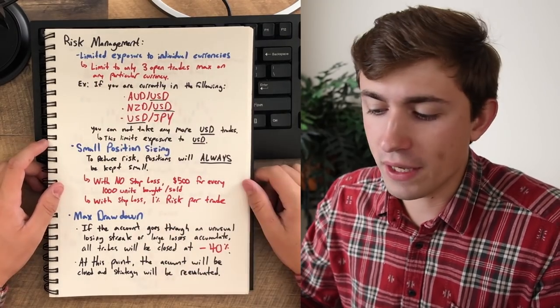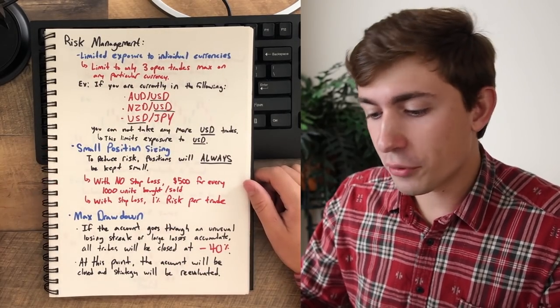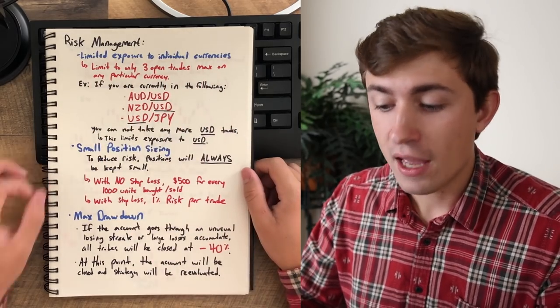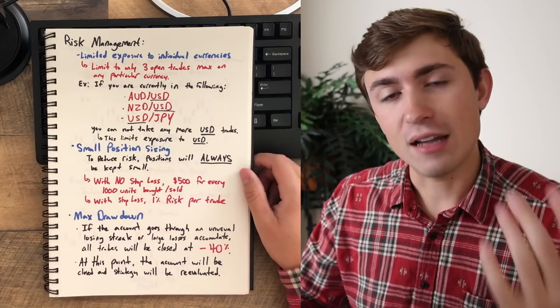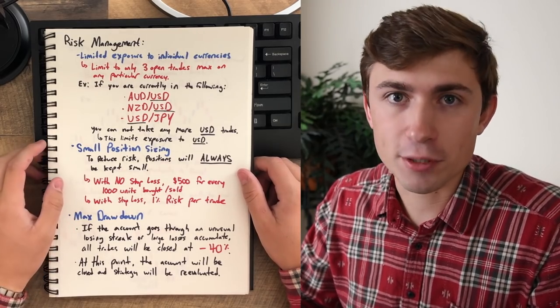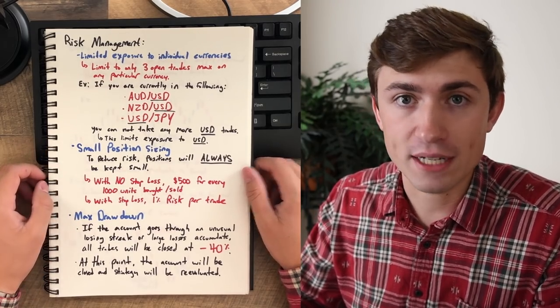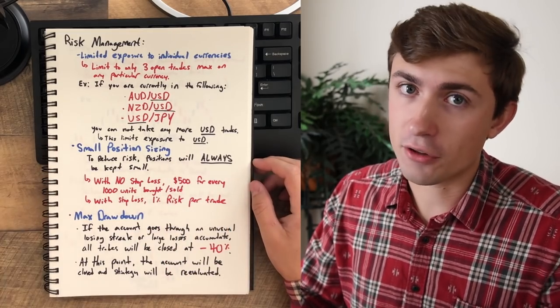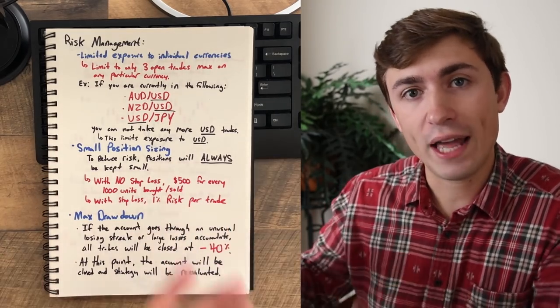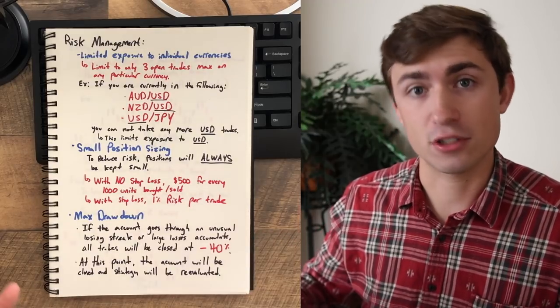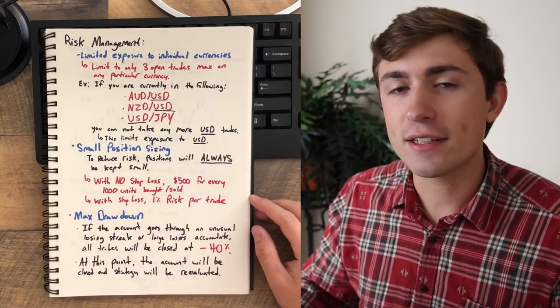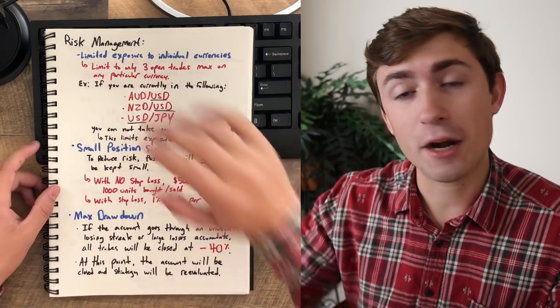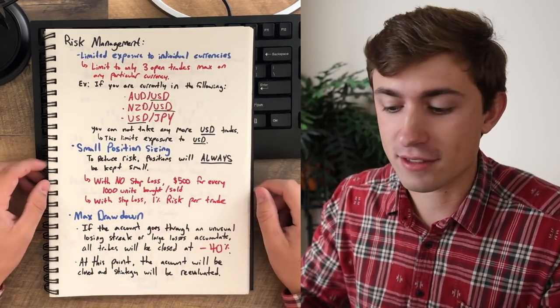Limited exposure to individual currencies. What you'll notice here is that I limit only three open trades max on any particular currency. This is part of my risk management plan. A lot of people think that the only way to manage risk is just to put a tight stop loss on your trade. And I would disagree with that because I think that there are other ways, not just on the retail side, but institutional ways, right? They'll hedge their bets. They'll kind of limit their exposure to particular things.